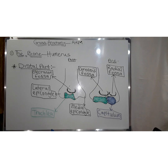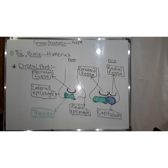The distal part of this bone has a more prominent medial epicondyle and a lateral epicondyle. On the posterior view is a depression called the olecranon fossa, and a pulley-like structure called the trochlea. On the anterior view there are two depressions: the coronoid fossa anteriorly and the radial fossa anterolaterally. The capitulum is seen lateral to the trochlea.